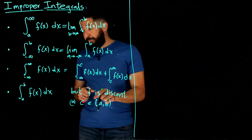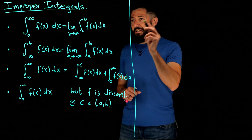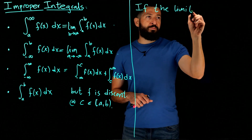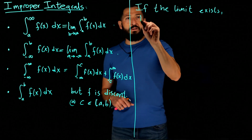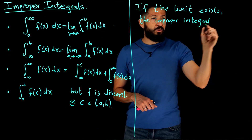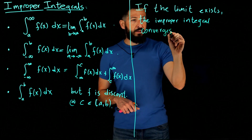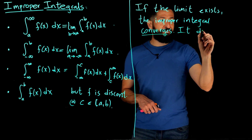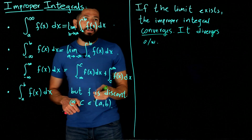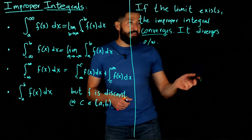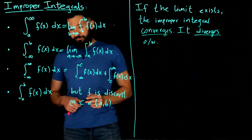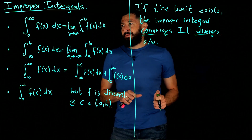We're going to check whether the limit exists or not. If any one of these limits exists, we say that the improper integral converges. If you compute your limit and you get infinity or the limit is undefined, then you say that your improper integral diverges and there's no value for it. If it converges, it converges to the value of that limit.